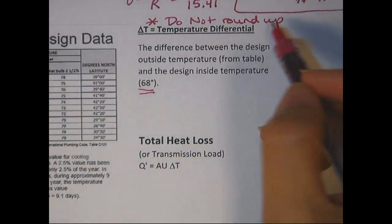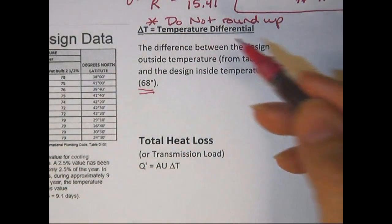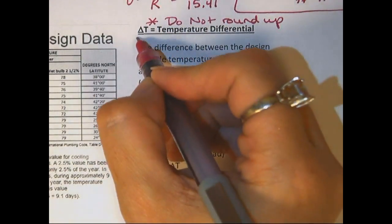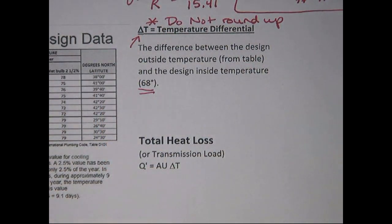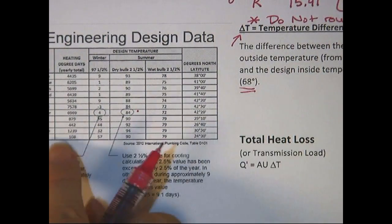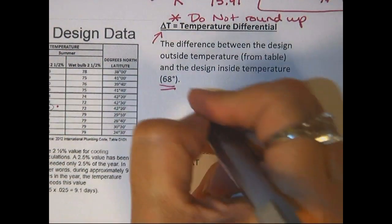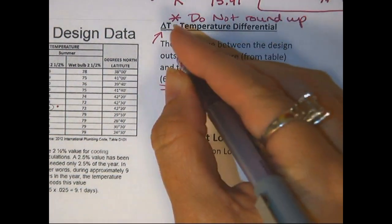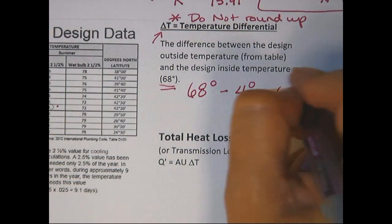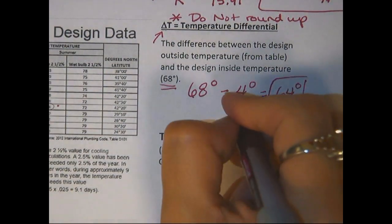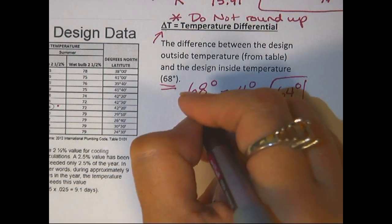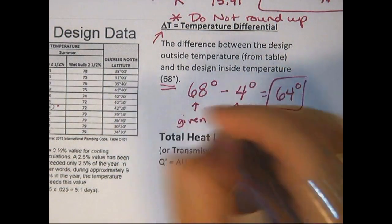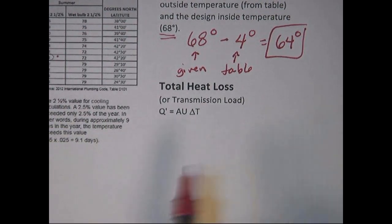So then a difference, or a differential, or a difference, we just subtract things. Delta, you'll remember from PoE, means just take the subtraction of the two items there. So we take the temperature we got over here, 4 degrees, and we subtract it from our design temperature, and we get that our delta T is going to be 64 degrees. So this one's from the table. This one's given.